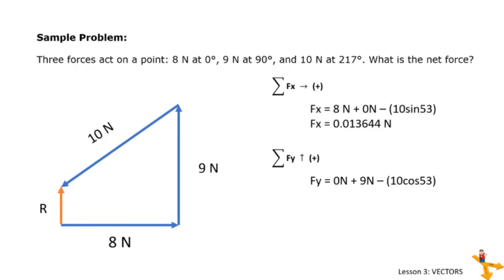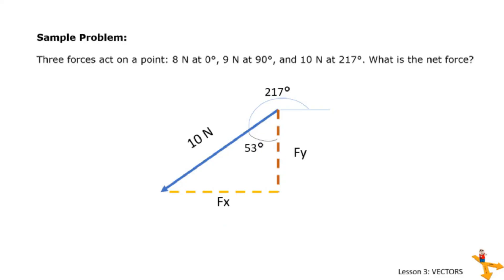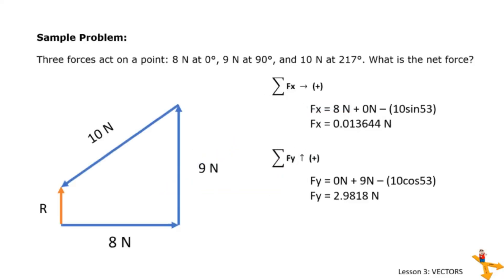For the summation of Fy, we write all magnitudes directed upward as positive. Now to get Fy, we use cosine considering that the angle is between the adjacent side and the hypotenuse. For the summation of Fy, we get 2.9818.